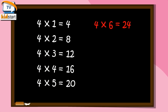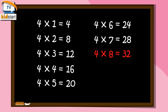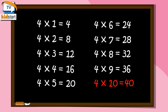Four Sixes are Twenty-Four. Four Sevens are Twenty-Eight. Four Eights are Thirty-Two. Four Nines are Thirty-Six. Four Tens are Forty.